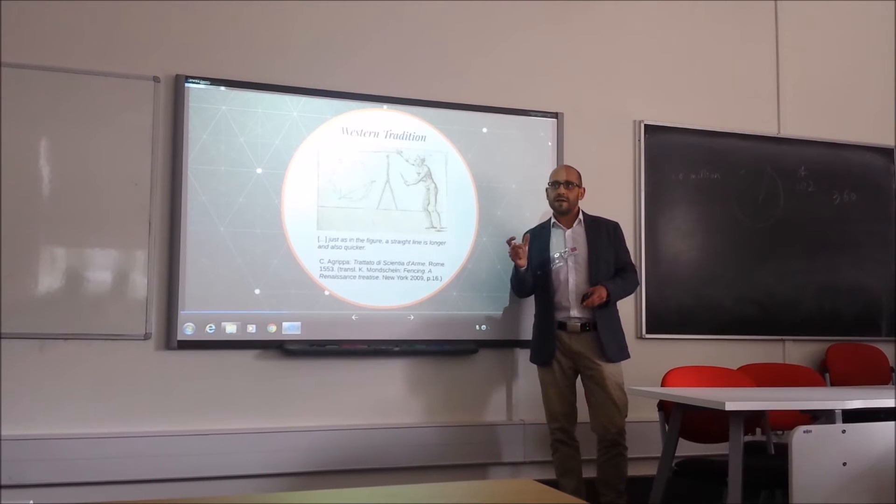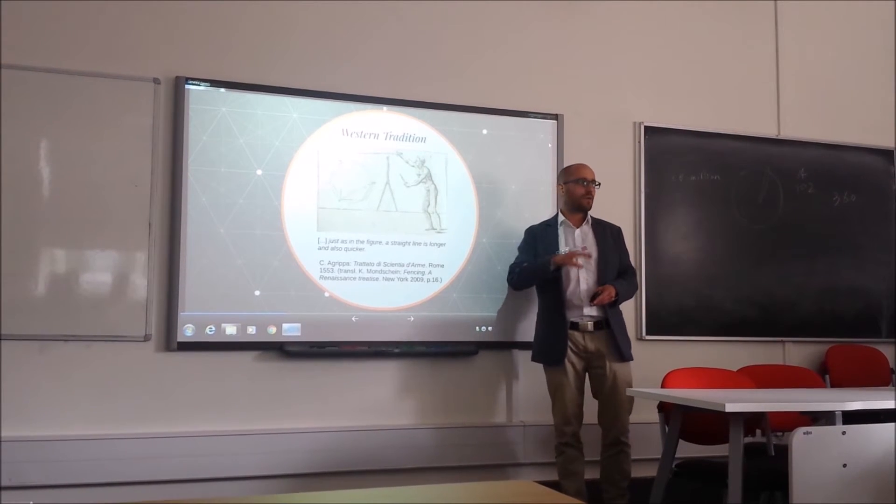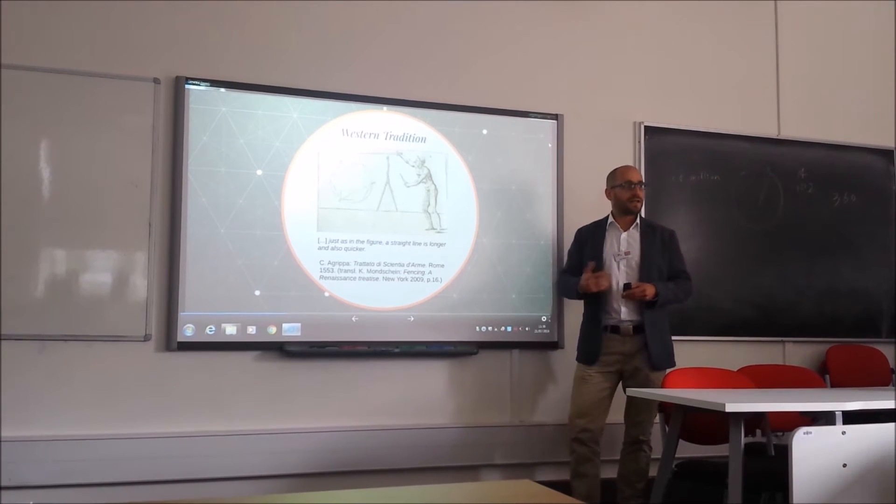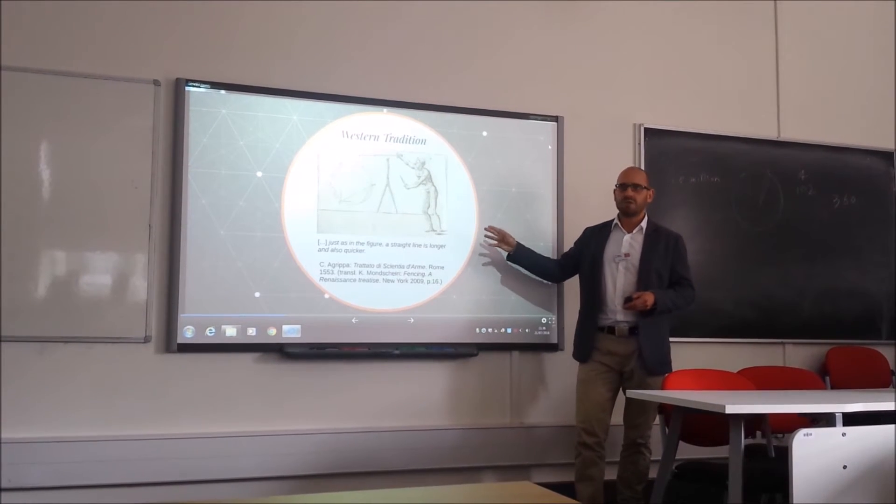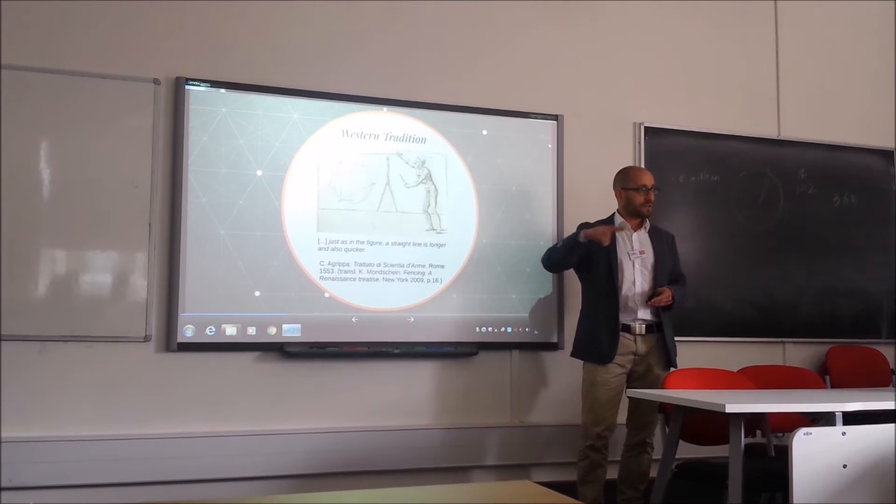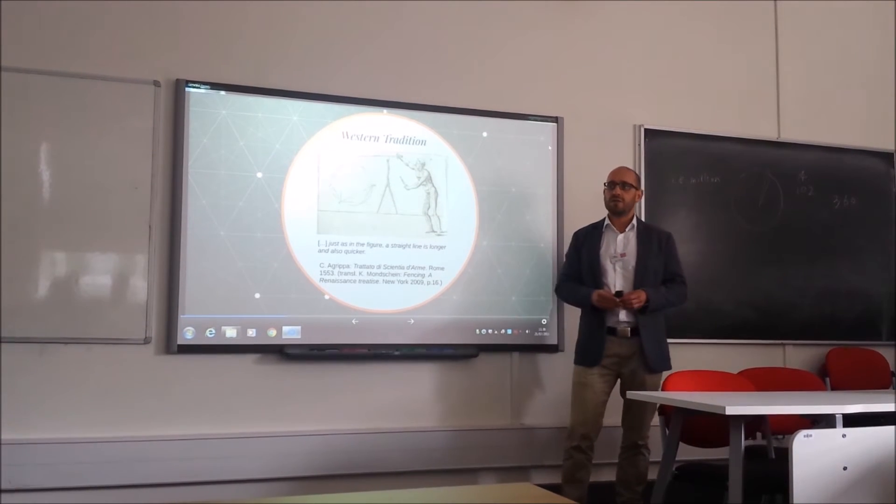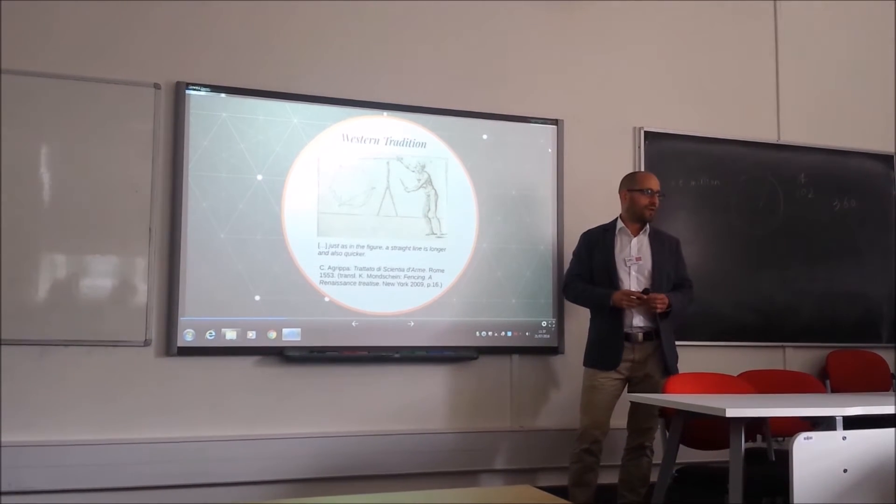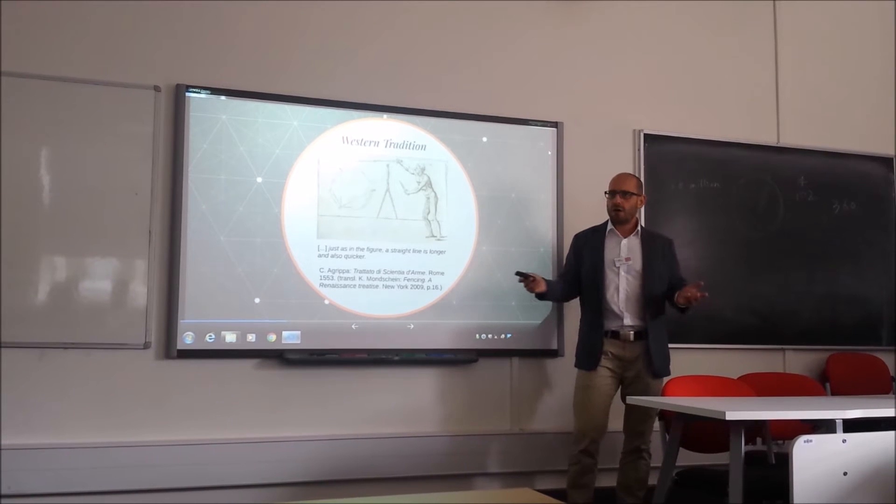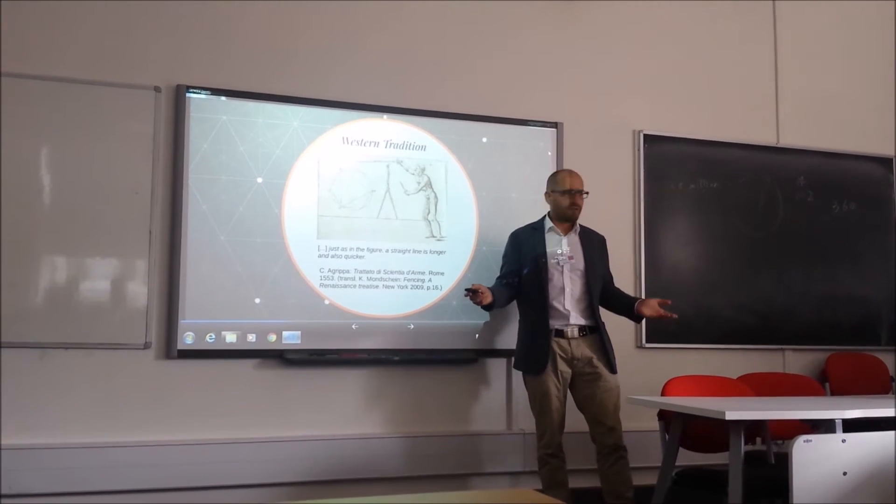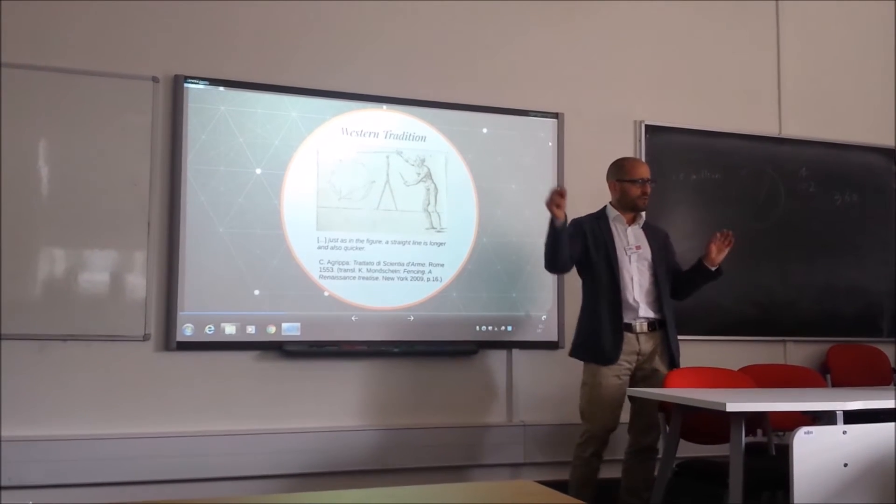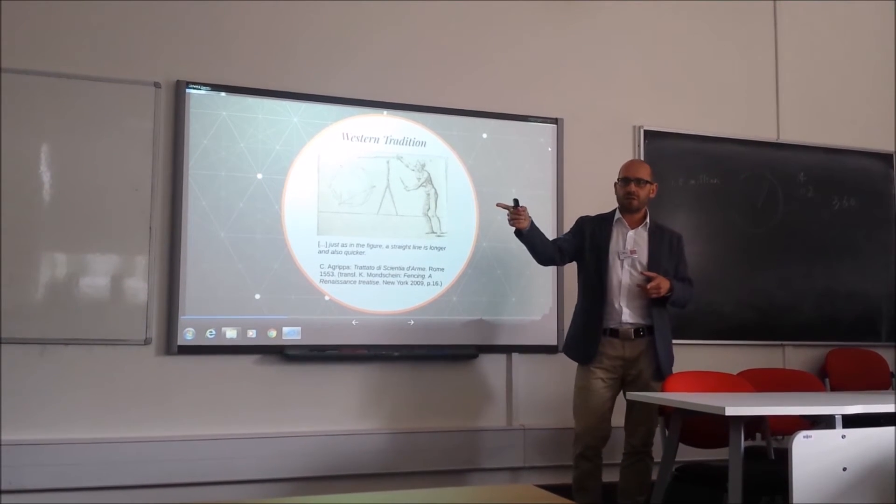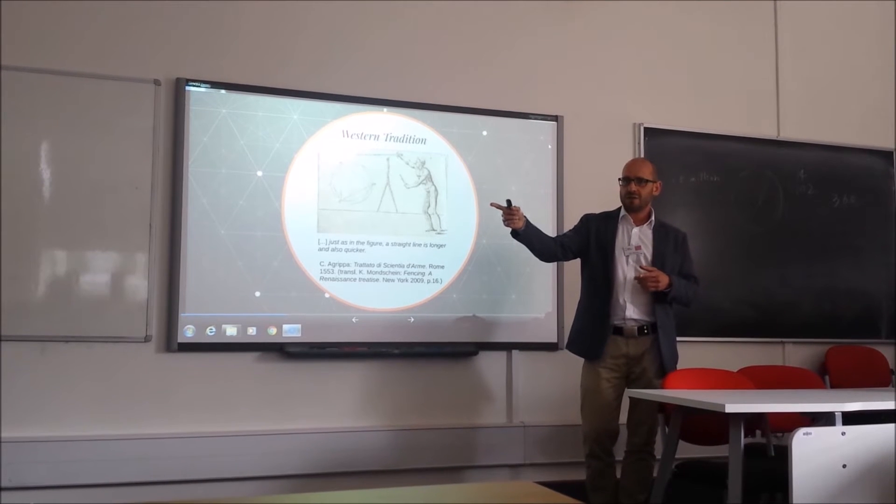This is the first guard, and he writes, I have the translation from Ken Mondschein here, just as in the figure, a straight line is longer and also quicker. So he bases his fencing system on thrusting more or less exclusively. I think there are some cuts, I'm not a perfect expert on Agrippa fencing. But he bases his system more or less on thrusts, in contrast to other Italian sword fighting styles that were back then. For example, Marozzo, another Italian fencing author who wrote about 20 years before him, was heavily employing cuts and thrusts. But Agrippa concentrates on the thrust style and explains in his book why the thrust will always hit home earlier than the other one.